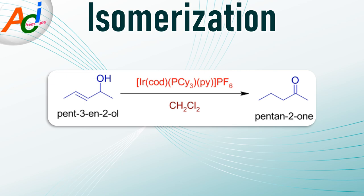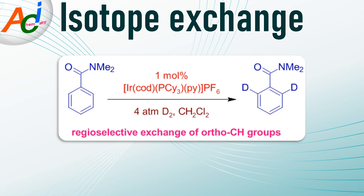In this example, the allylic alcohol is isomerized to a ketone due to shifting of a double bond. As already mentioned, the Crabtree's catalyst is an industrial standard for isotopic exchange of hydrogen isotopes, as exemplified on the screen.